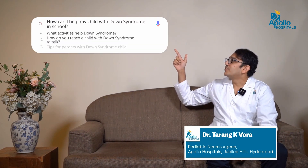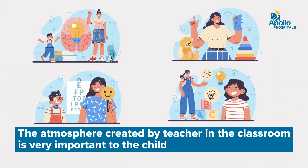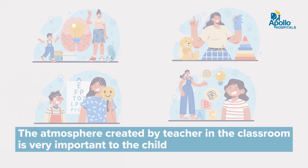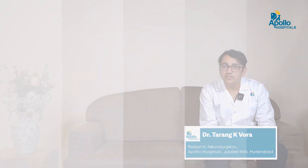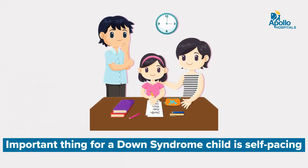How can I help my child with Down syndrome in school? There are three important points. First, in the school, the environment created by the teacher matters a lot to the child. While choosing the school, having a good rapport between the parent and the teacher is very essential. The first important requirement is self-pacing, which basically means there cannot be a fixed curriculum or a fixed exam on which the child will be judged.